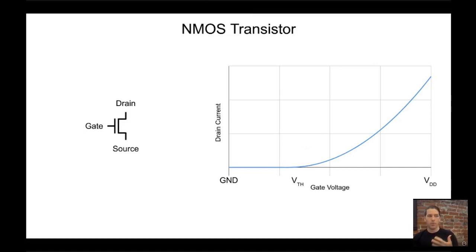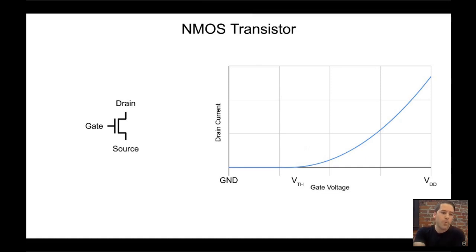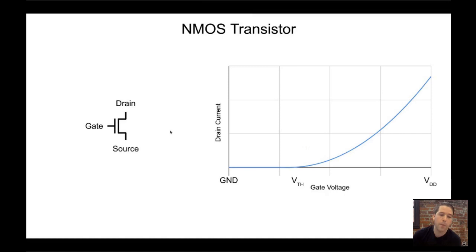NMOS and PMOS are complements of each other, which makes CMOS logic — complementary metal-oxide-semiconductor. The three terminals are gate, drain, and source. The voltage on the gate determines whether or not the drain and source are connected. For the NMOS transistor, when the voltage on the gate is low, the drain and source remain disconnected and current is not allowed to flow between them. When the voltage on the gate is high, the drain and source are connected — effectively the switch is closed — and current is allowed to flow.